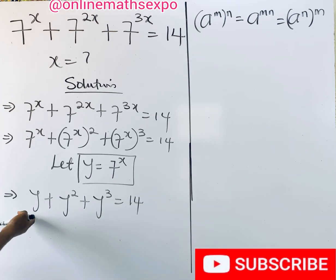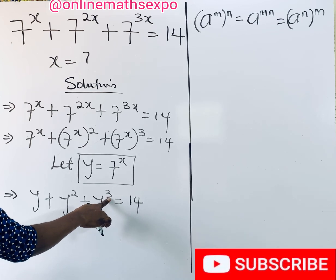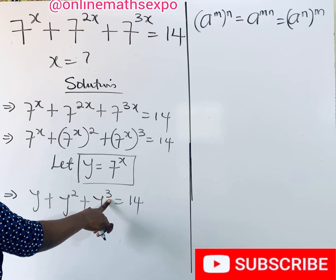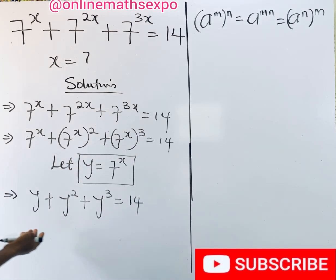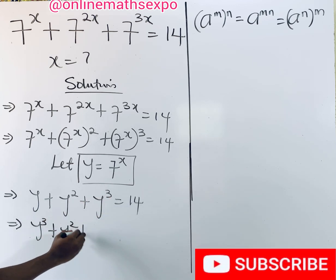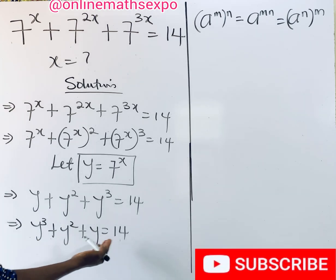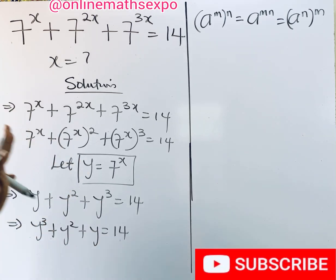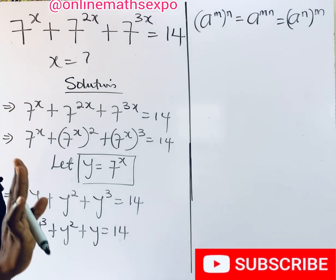So we are going to have y plus y squared plus y cubed equal to 14. Observe carefully — this has led to a cubic equation because the highest power of y is 3, meaning we are going to have three values of y. Rearrange it: y cubed plus y squared plus y equals 14. There are many methods to solve this, but I'm going to teach you the easiest way.